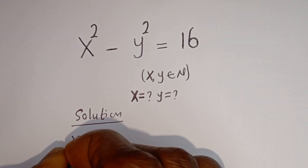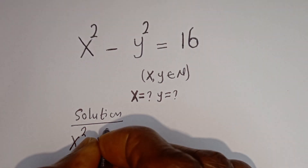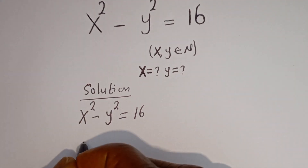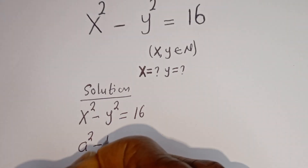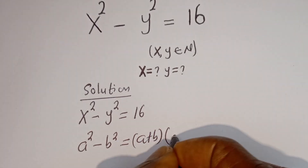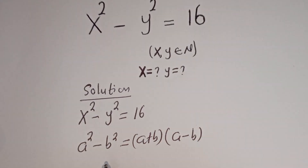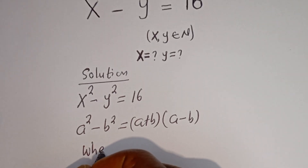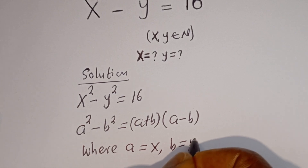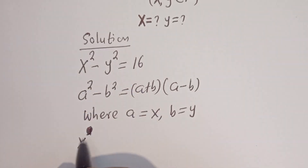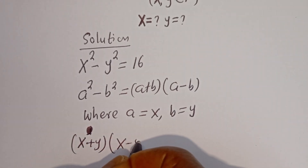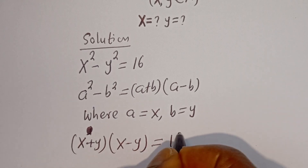Here we have x squared minus y squared is equal to 16. Take note that if you have a squared minus b squared, this is equal to (a + b)(a − b). Here a is equal to x and b is equal to y. So this can be written as (x + y)(x − y) is equal to 16.